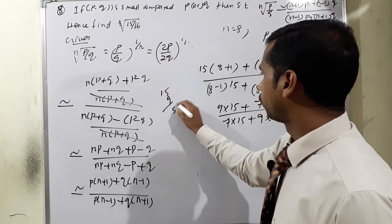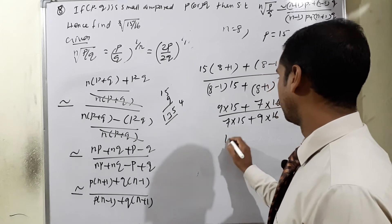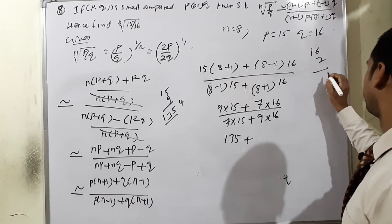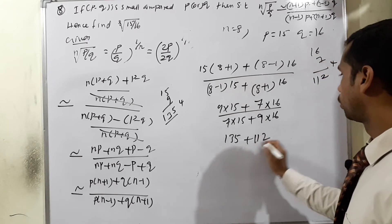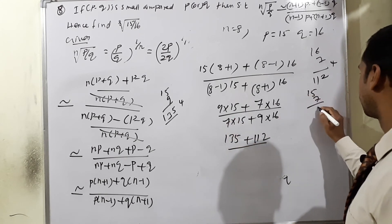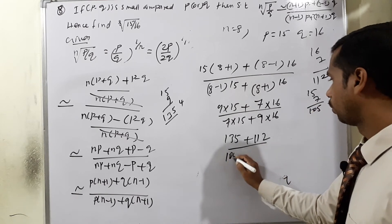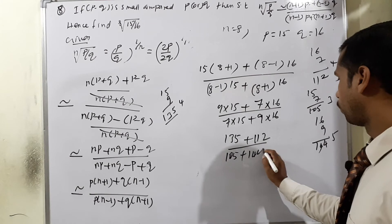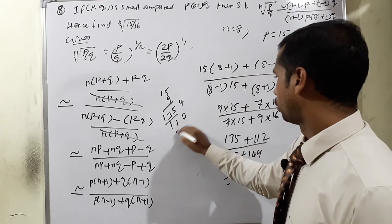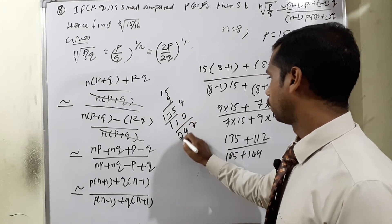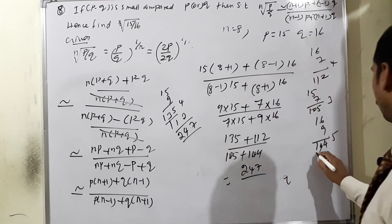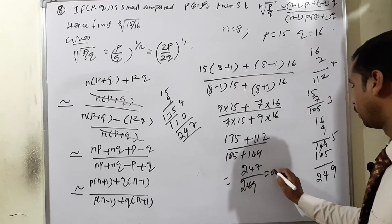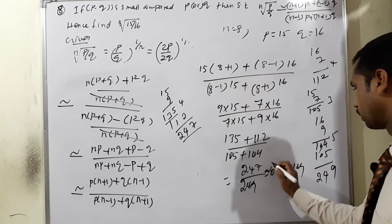Calculating: 9 × 15 = 135, 7 × 16 = 112, so numerator = 247. Denominator: 7 × 15 = 105, 9 × 16 = 144, so denominator = 249. Therefore 8th root of (15/16) ≈ 247/249 ≈ 0.99169. This is the approximate answer.